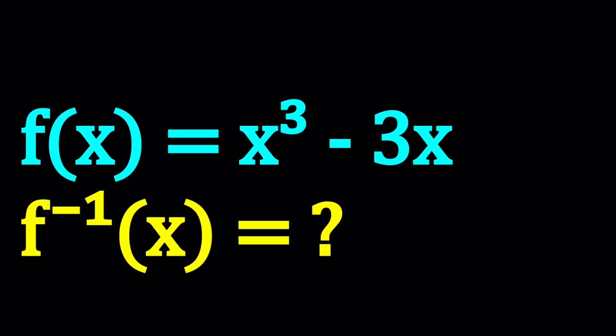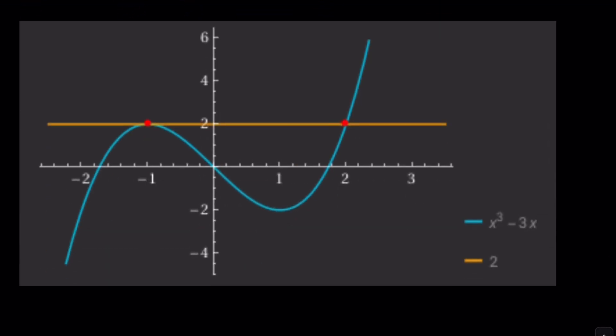Let me show you a graph first because the graph is important to understand what is going on here. We have a cubic function that has three x-intercepts at zero and two other values, right?